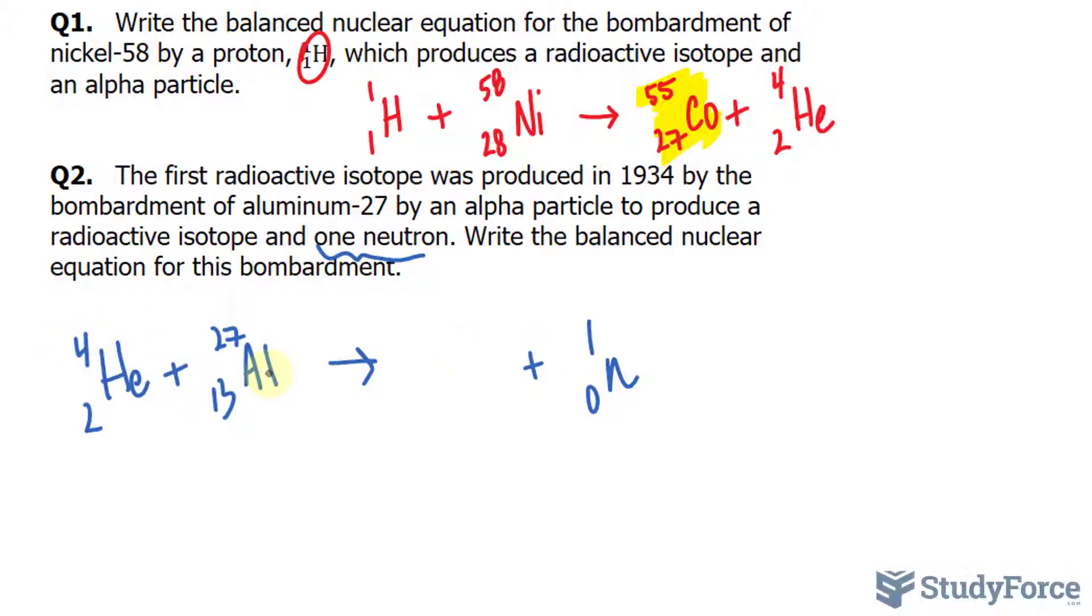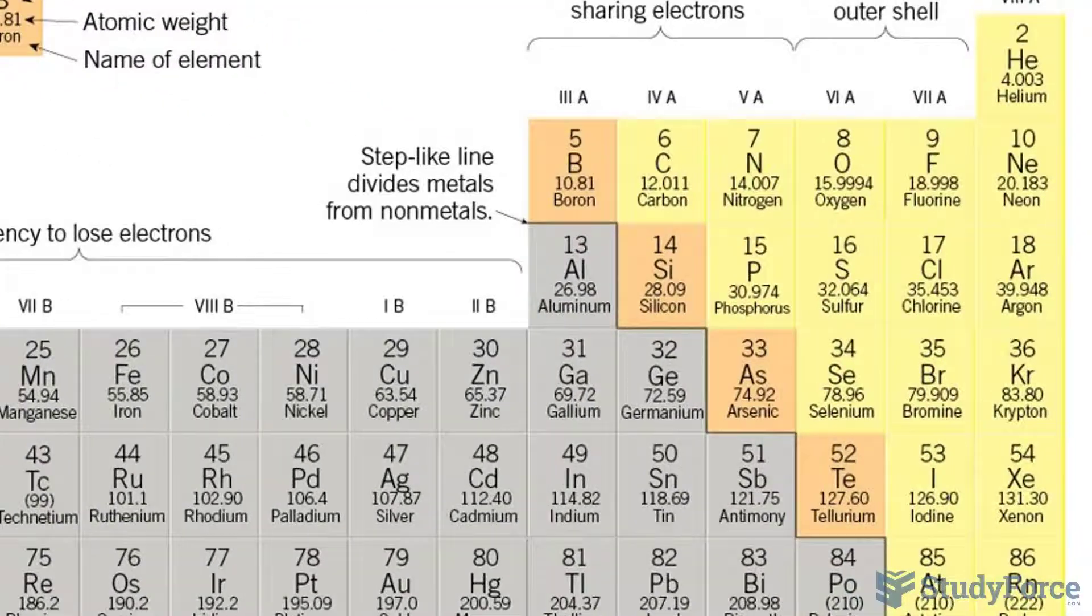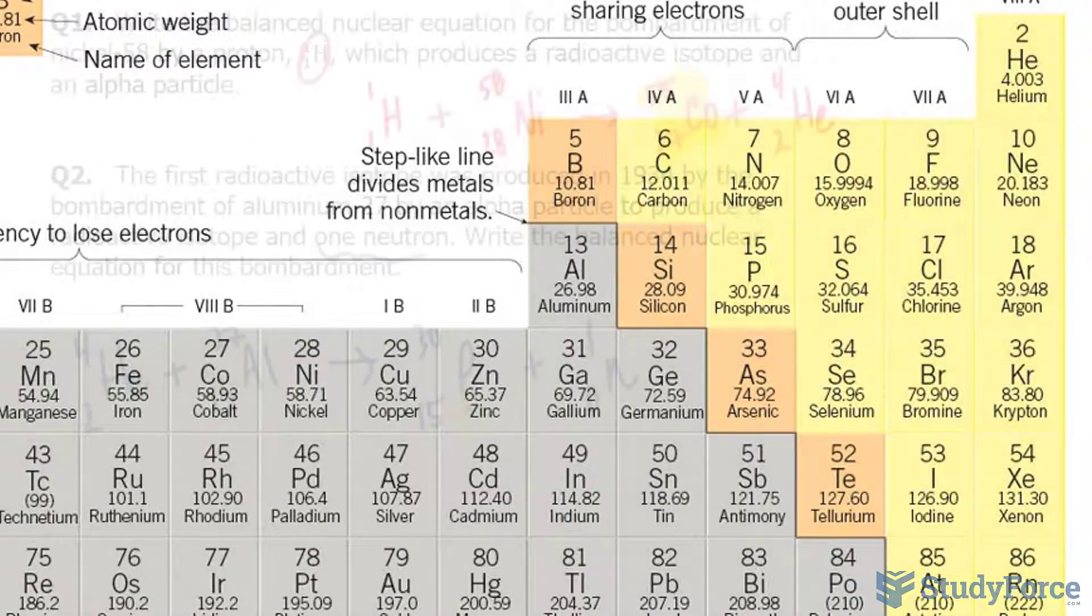So let's do the math here. 4 plus 27 is 31. 31 minus 1 is 30. And similarly, 2 plus 13 is 15. We have to find out what the 15th element on the periodic table is. And it happens to be phosphorus. So we'll write down P.